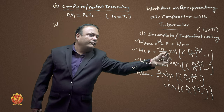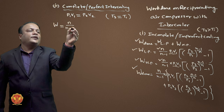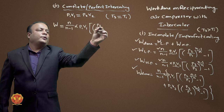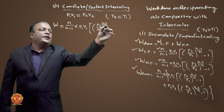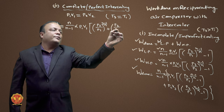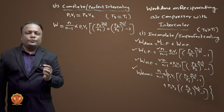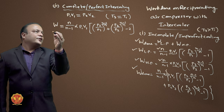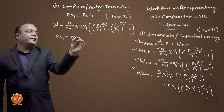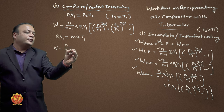Since P1V1 = P2V2, the total work done for LP and HP becomes: N/(N-1) × P1V1 × [(P2/P1)^((N-1)/N) + (P3/P2)^((N-1)/N) − 2]. This is the work done for perfect intercooling. Since P1V1 = MRT1, this can be rewritten as N/(N-1) × MRT1 × [(P2/P1)^((N-1)/N) + (P3/P2)^((N-1)/N) − 2].